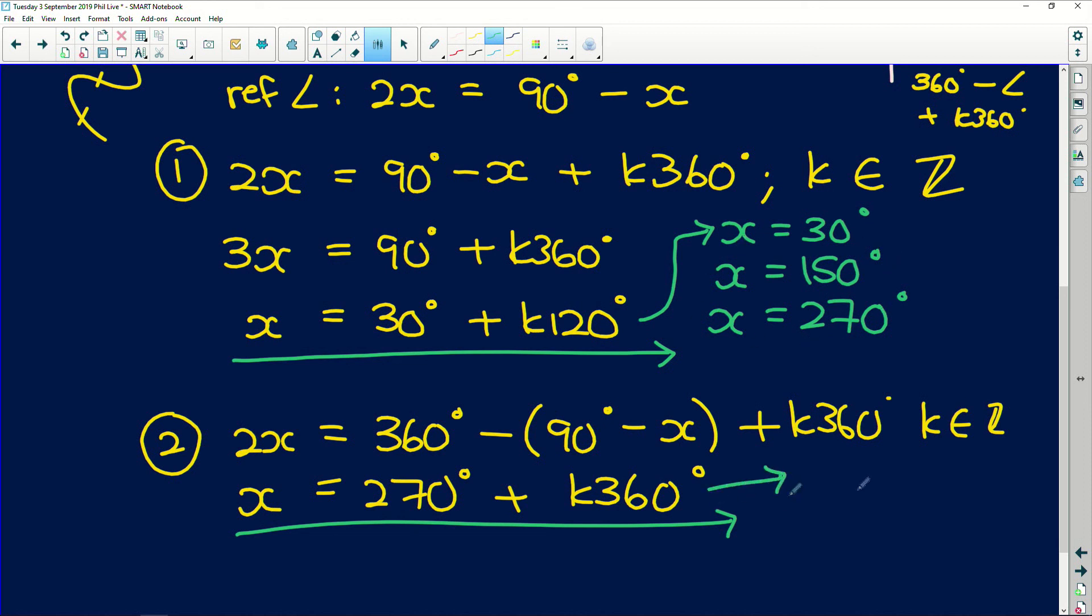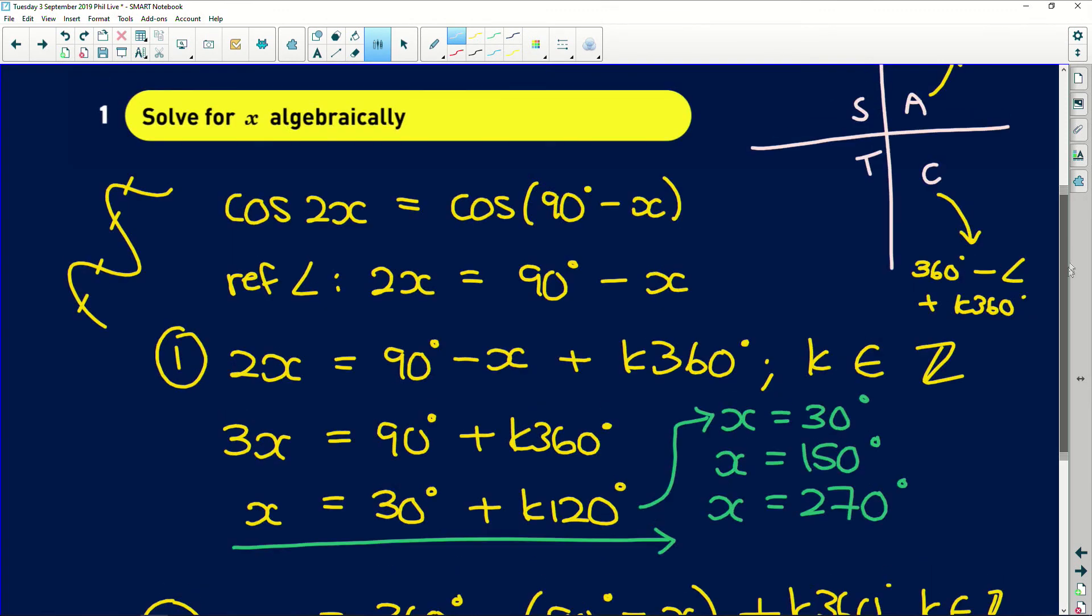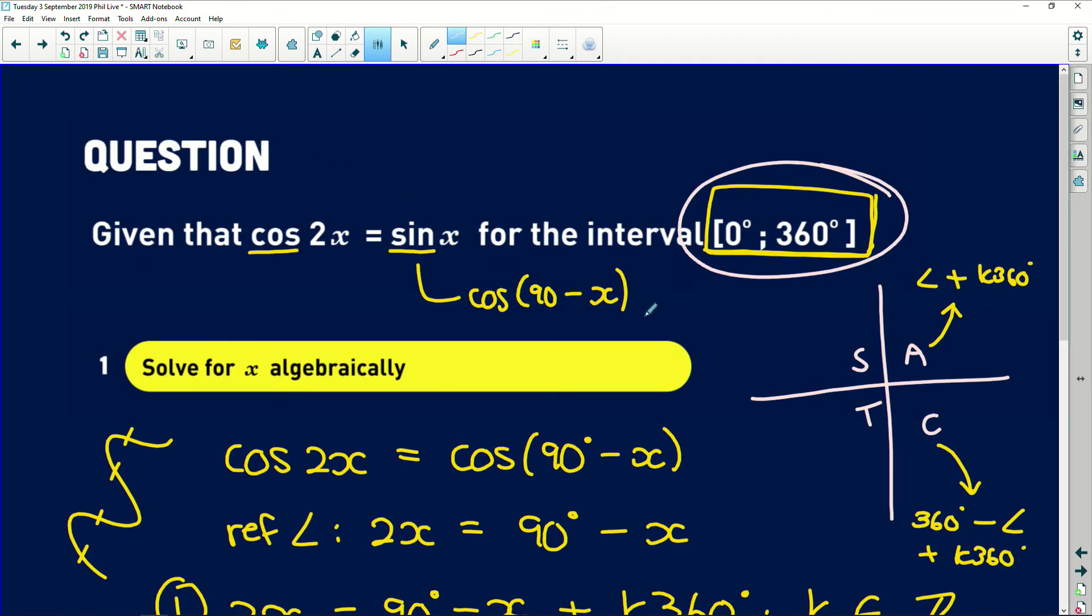And this one the only plausible option is x is equal to 270 degrees which falls within these parameters. So what you would say lastly is x is equal to 30 degrees or x is equal to 150 degrees or x is equal to 270 degrees. So remember when you get given an interval you're going to have specific x values. When you don't have an interval then you will have plus k 360 or k whatever it is. So specific x values which is what we solved for.